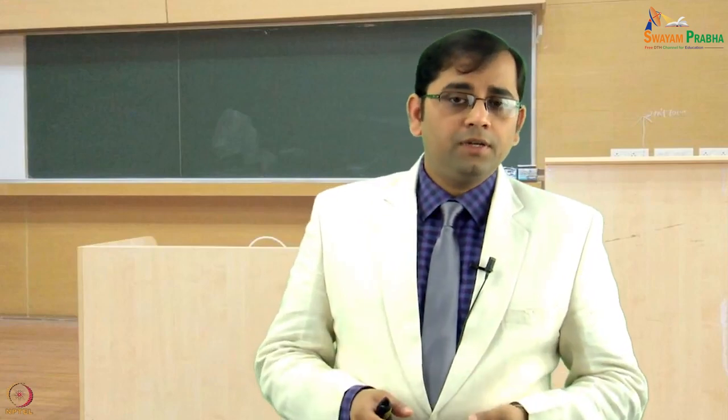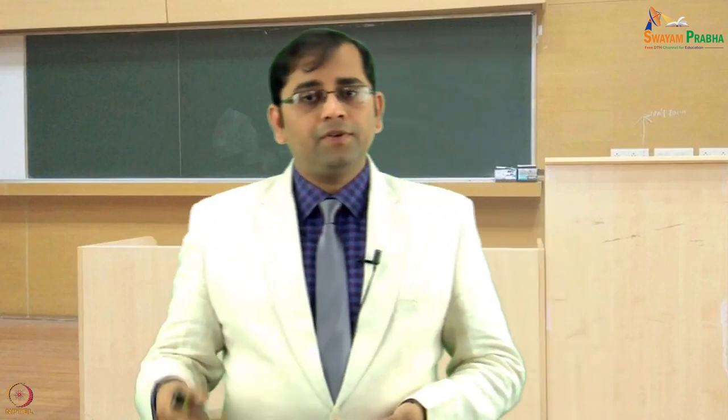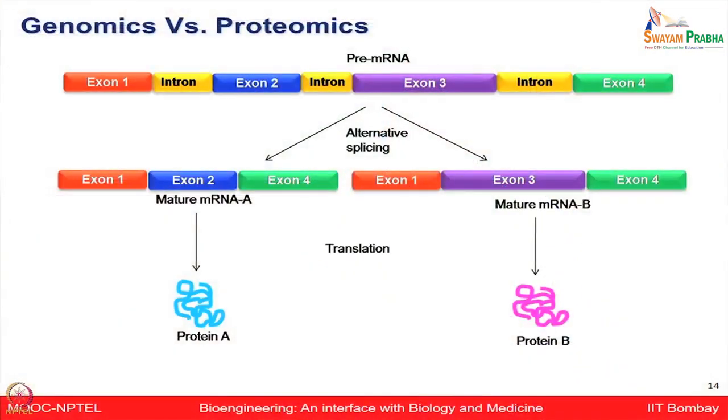Alternative splicing is a process by which exons, or the coding sequences of the pre-mRNA produced by transcription of a gene, are combined in different ways during RNA splicing. The resulting mature mRNAs can give rise to different protein products. For example, mature mRNA A will give rise to protein A, whereas mature mRNA B will give rise to protein B. Therefore, a single gene can give rise to multiple protein products.